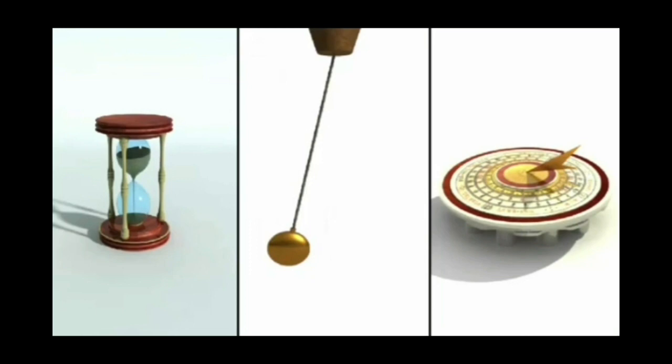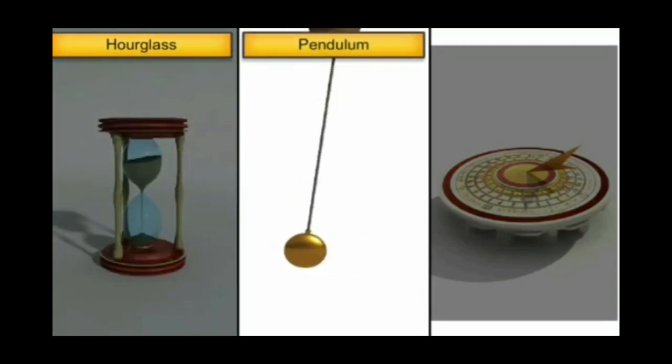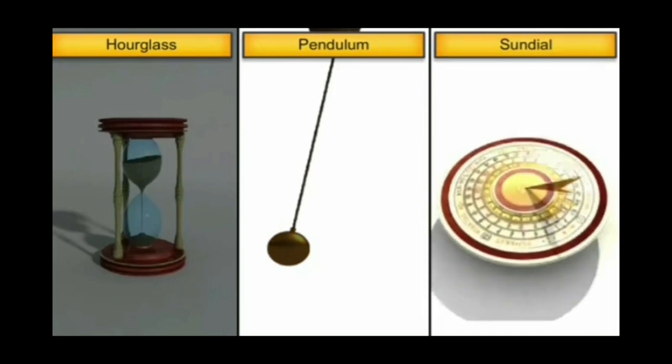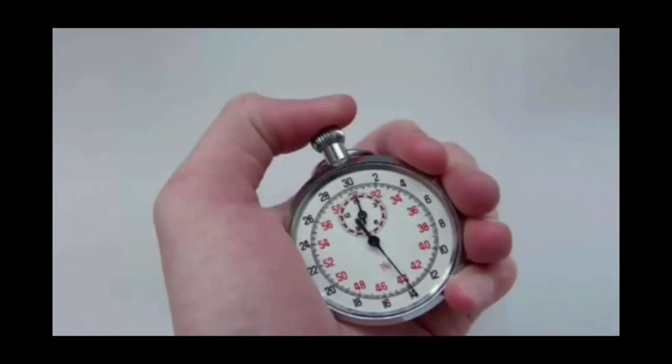Here comes the devices which were used to measure time previously. They are hourglass, pendulum and sundial. And after that, an era came where we started using stopwatches for high precision measurement of time. The basic logic behind the measurement of time lies with the periodic motion. That is how we have different units of time like second, minute, hours, days, years, etc.